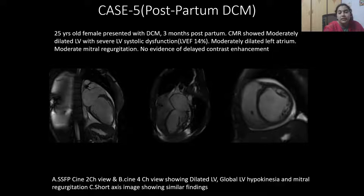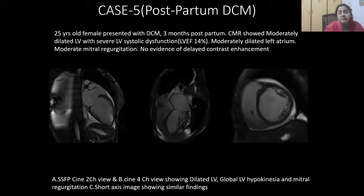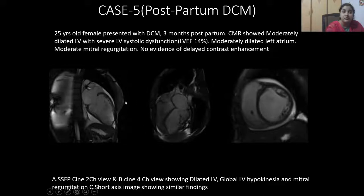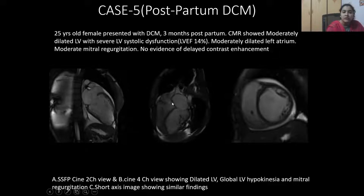Case 5 — Postpartum DCM: a 25-year-old female presented with dilated cardiomyopathy three months postpartum. Cardiac MRI showed moderately dilated left ventricle with severe LV systolic dysfunction and ejection fraction of approximately 14%, moderately dilated left atrium, mild-to-moderate mitral regurgitation, and no evidence of delayed contrast enhancement. SSFP two-chamber and four-chamber views show dilated left ventricle, global LV hypokinesia, and mitral regurgitation. Short-axis imaging showed similar findings.